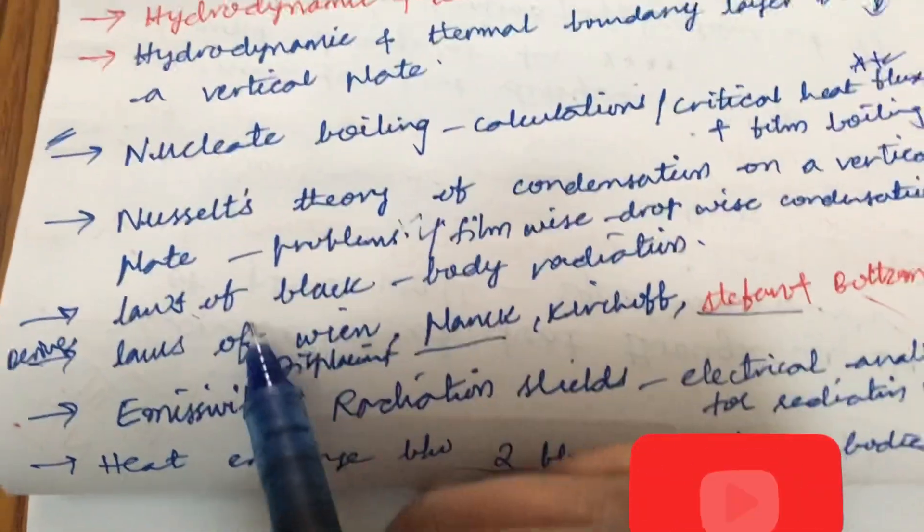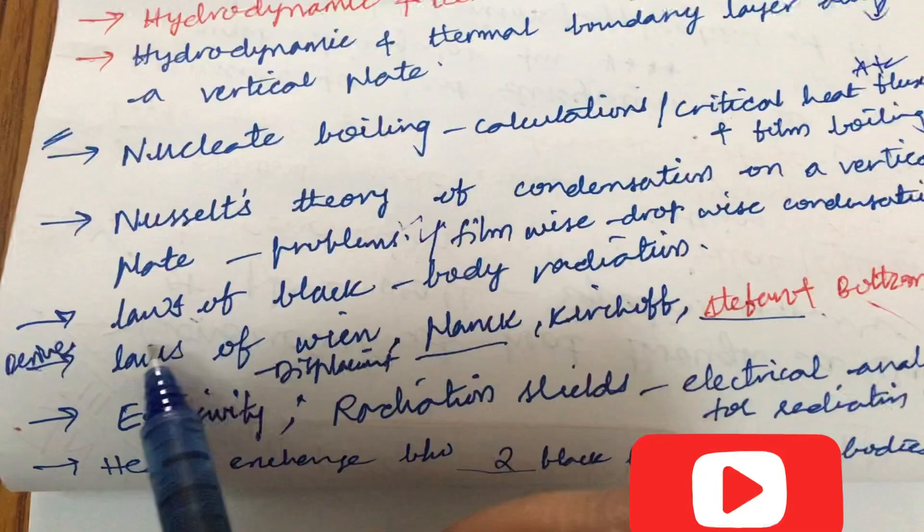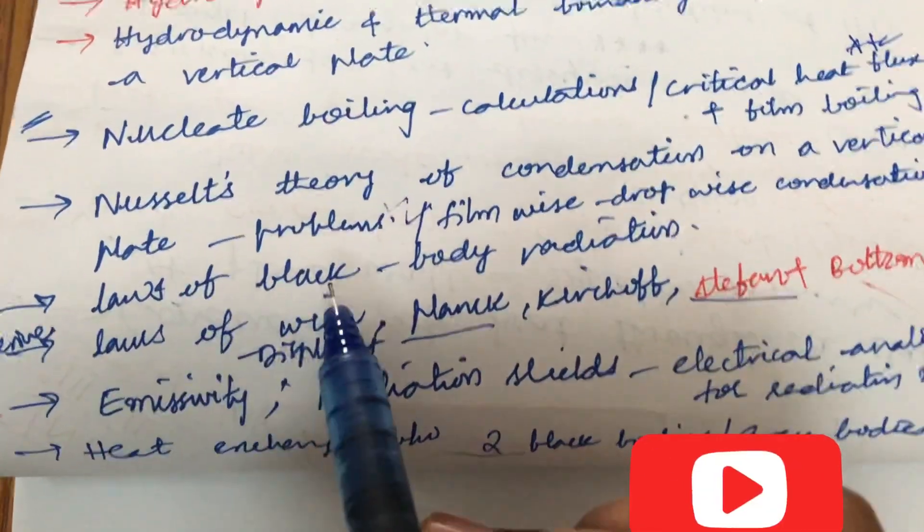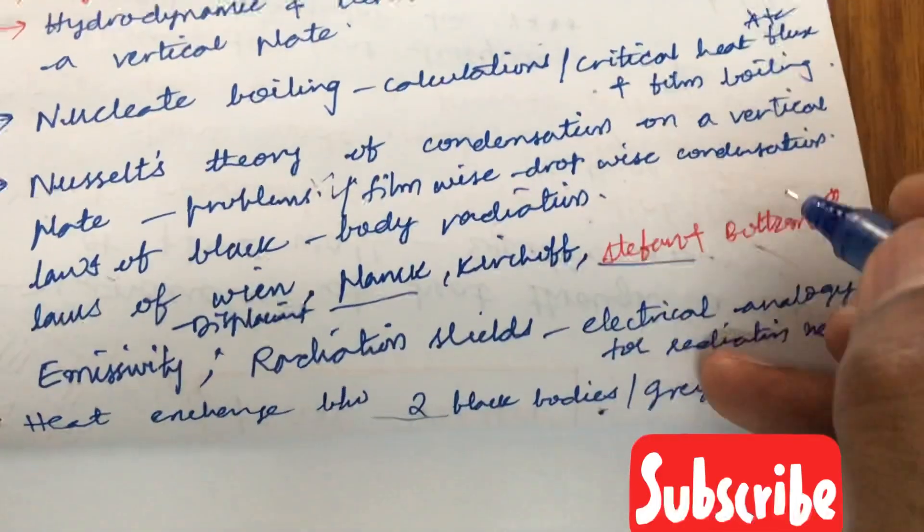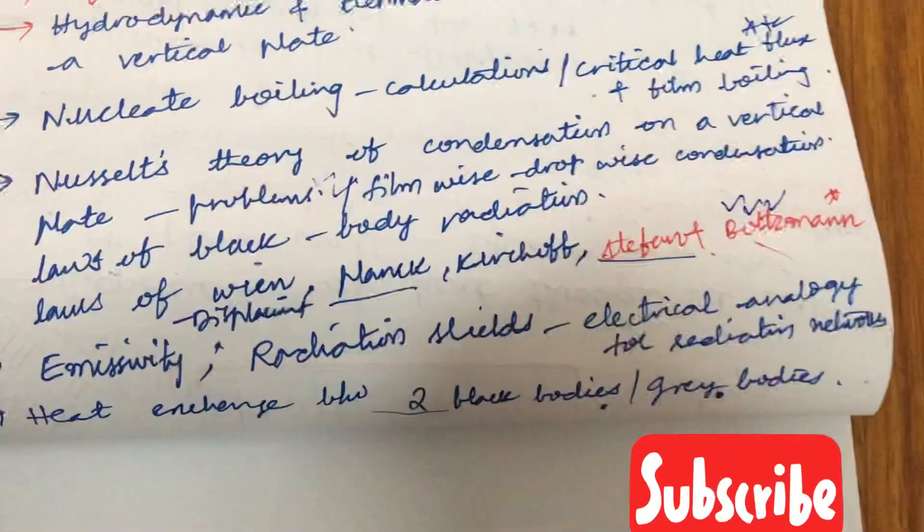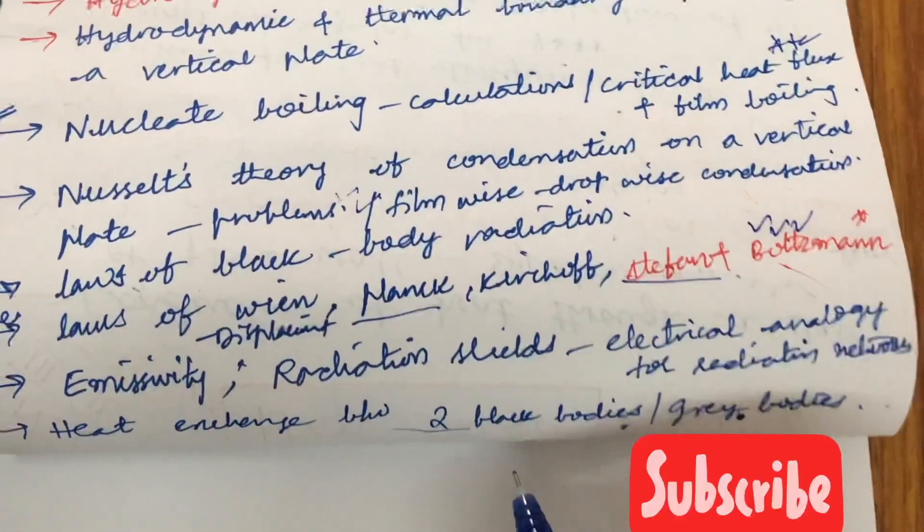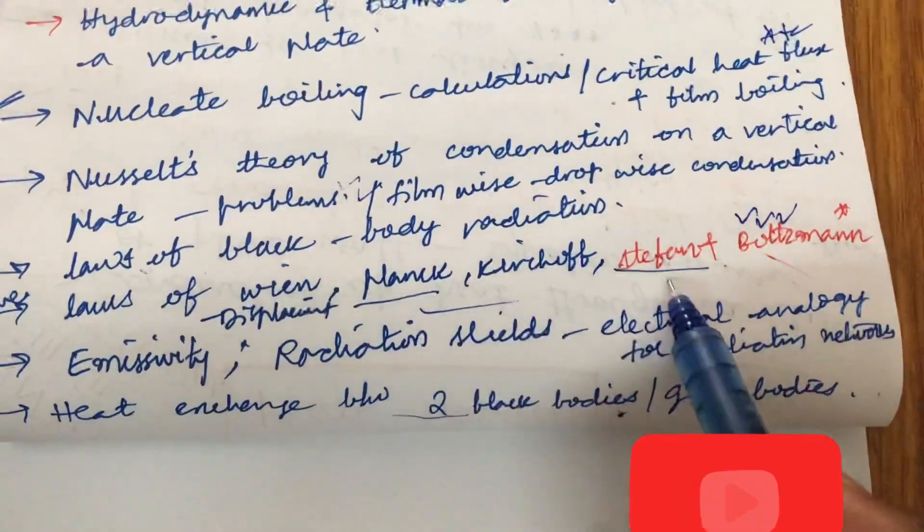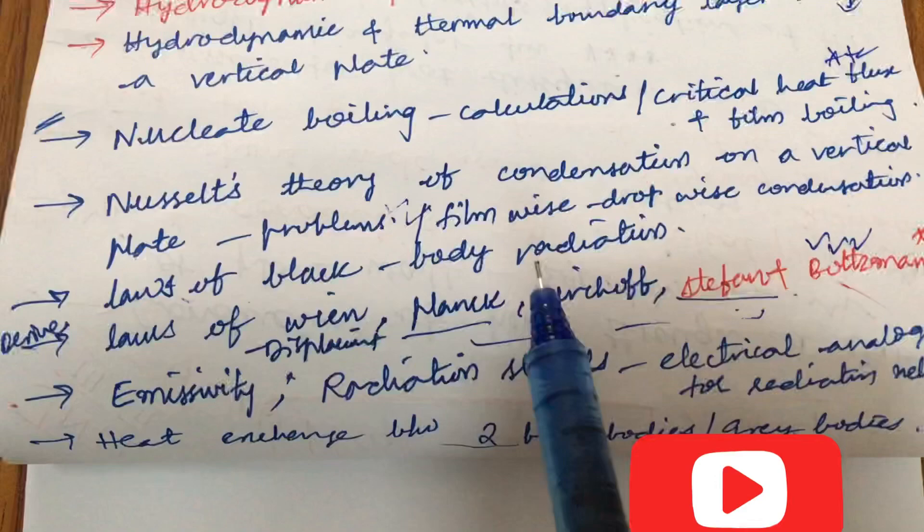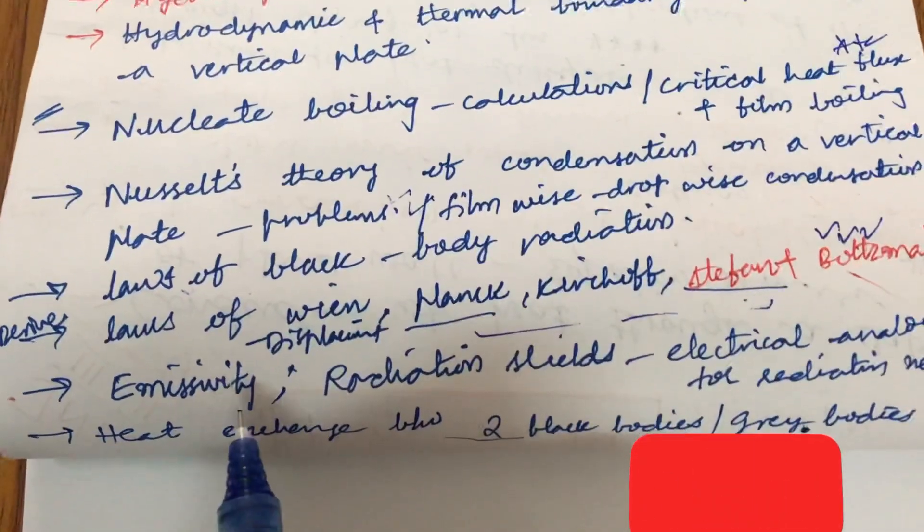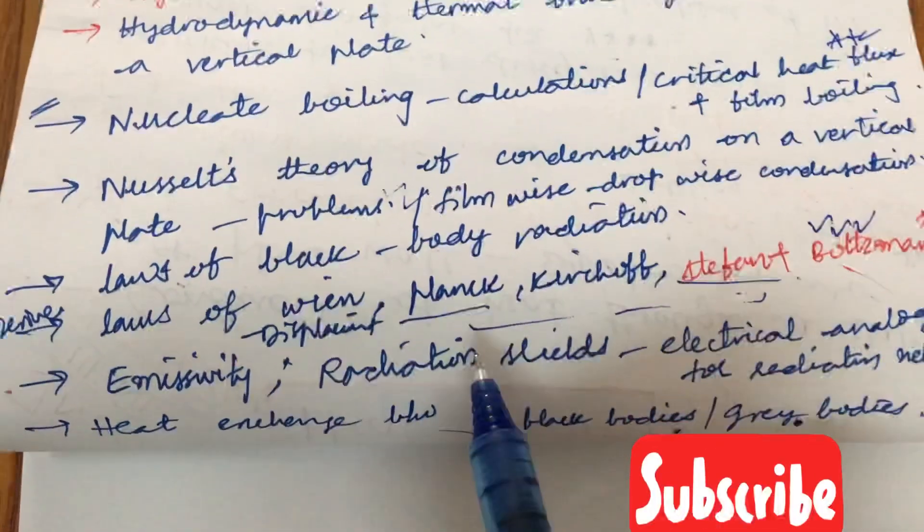One of the gunshot questions which I can tell you from unit 5 is all about derive the laws of Wien displacement or the Planck or Kirchhoff or Stefan-Boltzmann. This is asked several number of times repeatedly. You need to derive a derivation or they may be asking you the difference between any two among these four to five laws. Later, small definitions on emissivity as well as radiation shields.